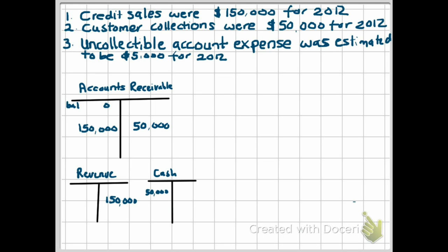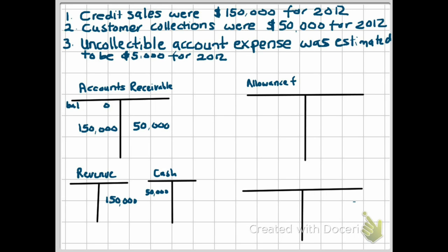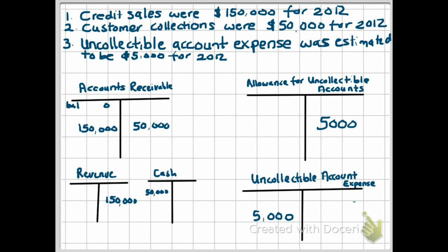Those are the basic journal entries for your credit sales and customer collections. Now, uncollectible account expense was estimated to be $5,000 for 2012. Whenever a company is using the allowance method, you have to set up two new accounts: the allowance for uncollectible accounts and the uncollectible account expense. Companies will debit the uncollectible account expense account and credit the allowance for uncollectible accounts for the amount of the estimate.